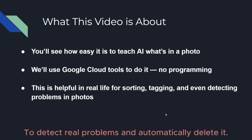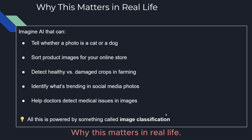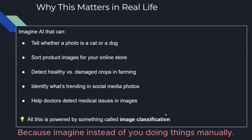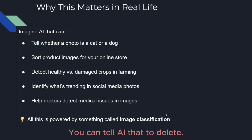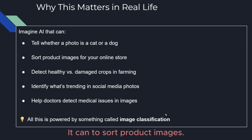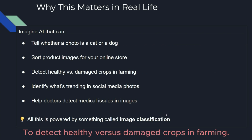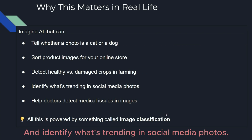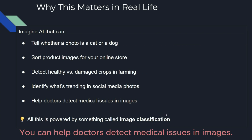This can be very helpful in real life. Instead of manually sorting multiple images, you can teach AI to detect real problems and automatically act on them — for example, sorting product images for your online store, detecting healthy versus damaged crops in farming, identifying what's trending in social media photos, or helping doctors detect medical issues in images.